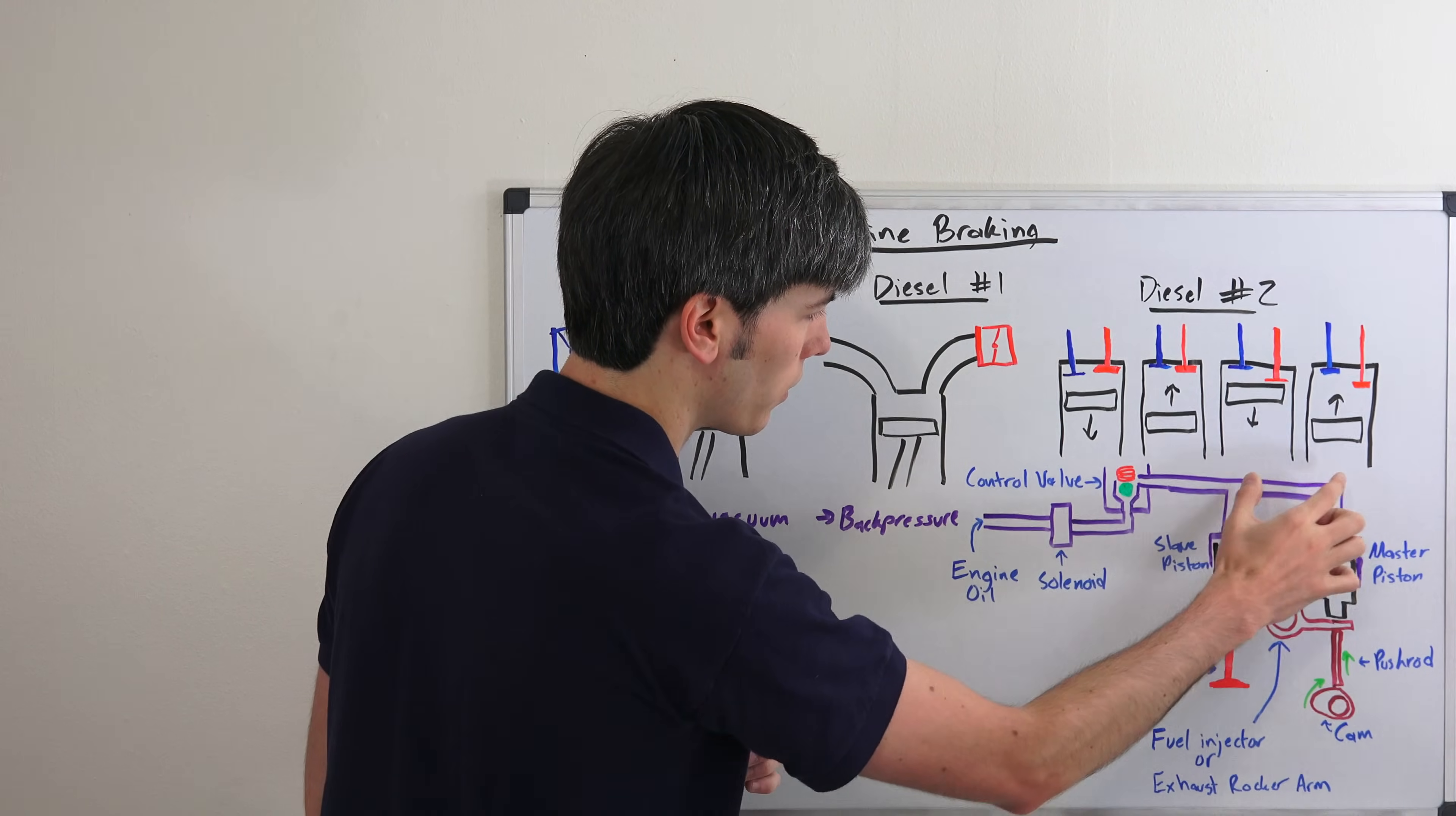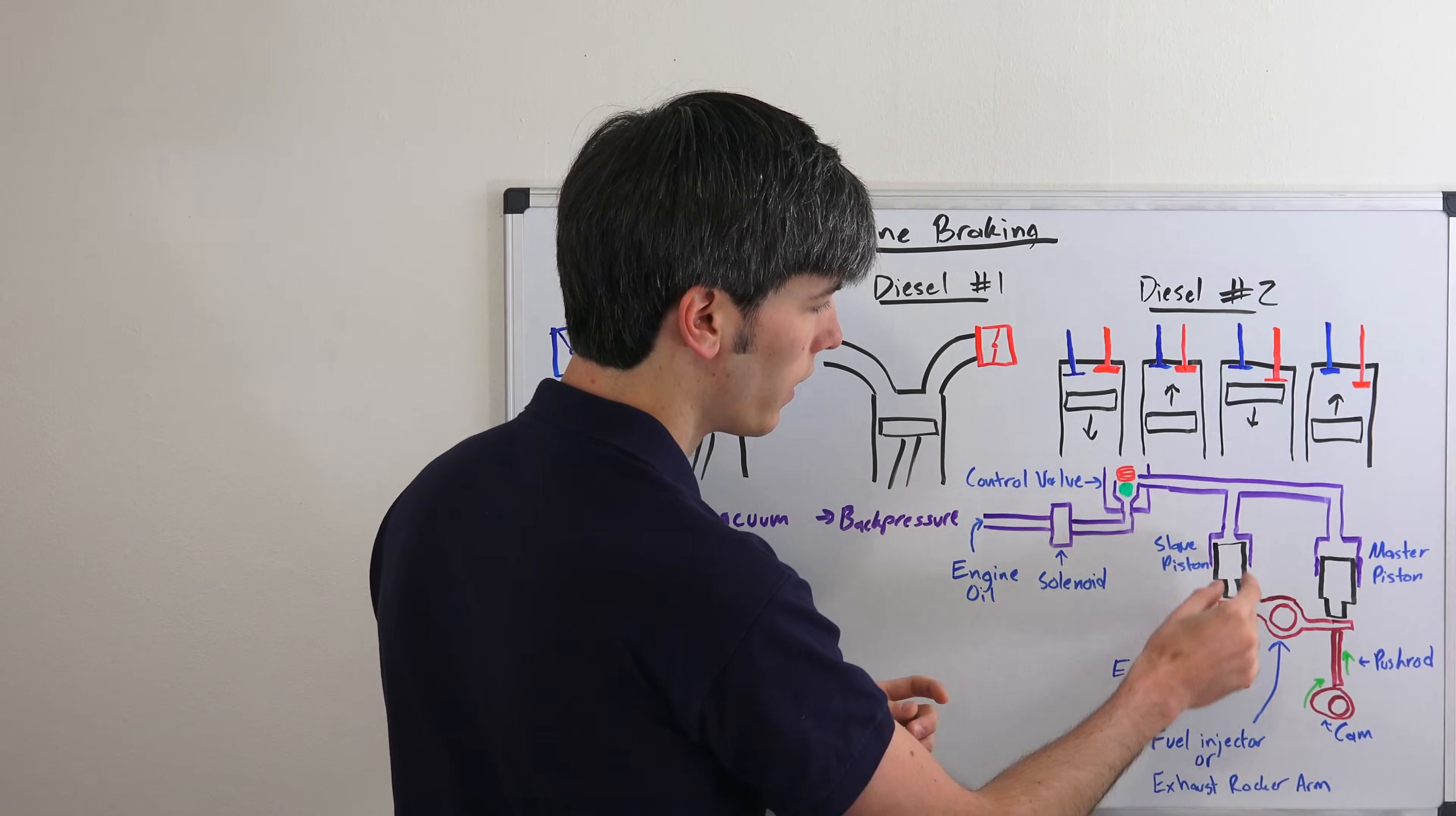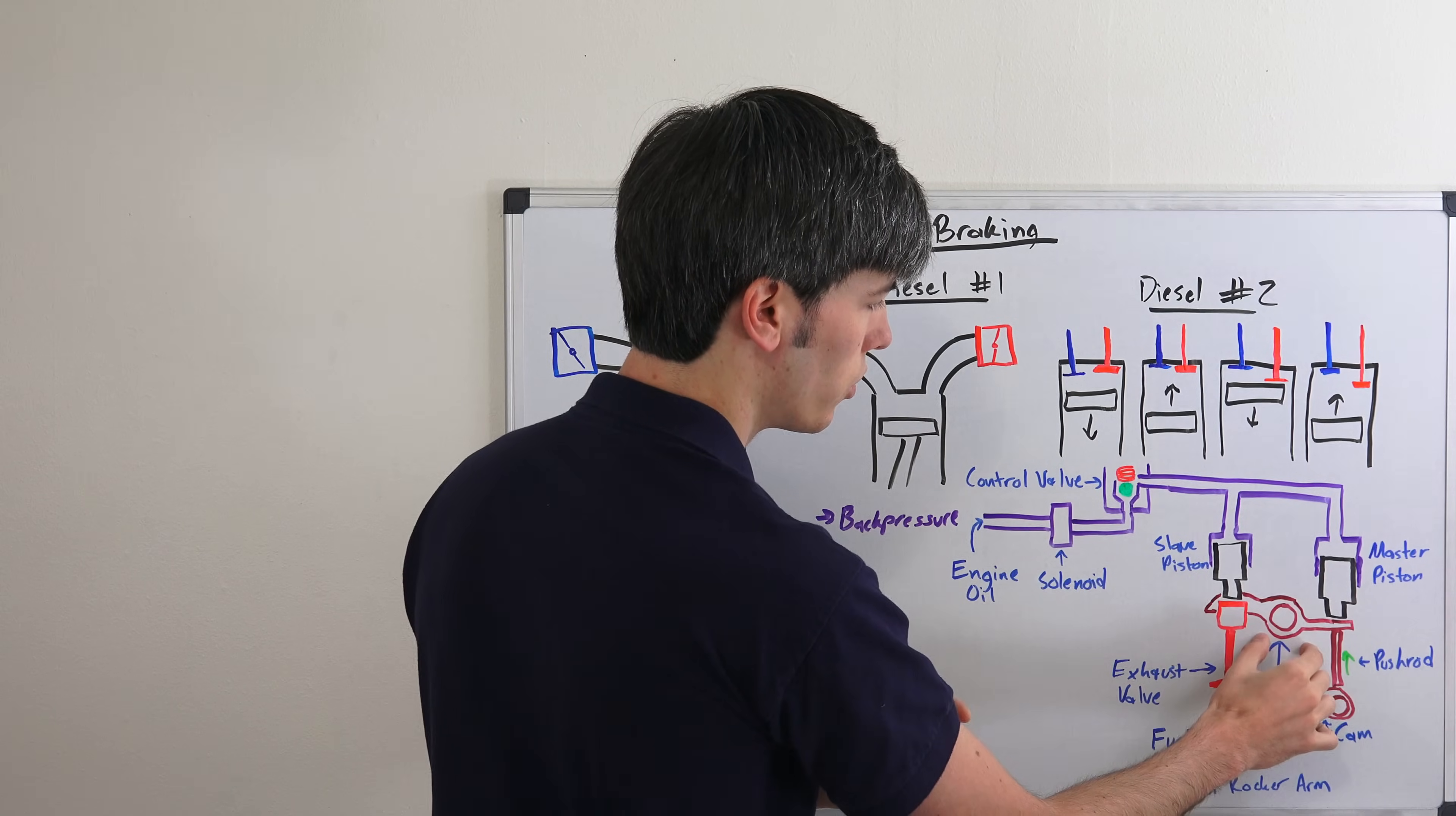Then that oil can flow within these two pistons. It'll move into the slave piston and the master piston. The slave piston is up against this exhaust valve and so it's got pressure there. So it won't be able to do anything to move that slave piston. The master piston however isn't going to have much resistance and so it's going to push it down onto a rocker arm.